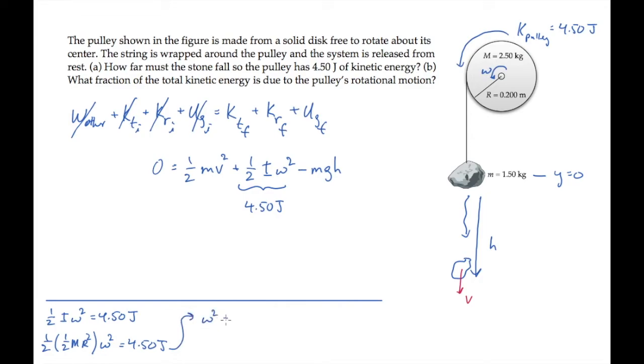Solve this for omega squared, substituting the known values, and taking the square root to see that omega is 13.4 radians per second when the pulley has four and a half joules of kinetic energy.